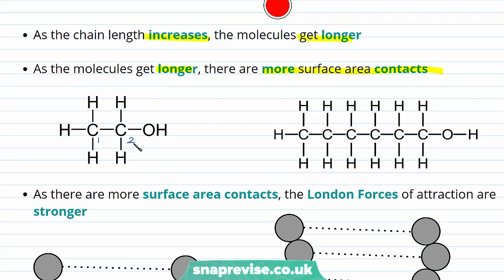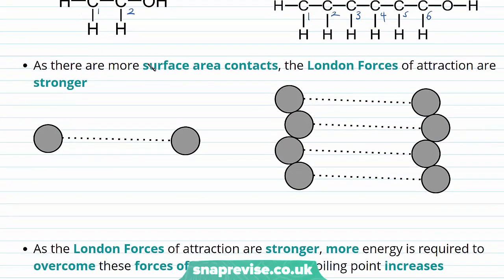...hexanol has one, two, three, four, five, six carbon atoms. Hexanol is comparatively much longer — it has a longer carbon chain. In our longer molecule hexanol, there are more surface area contacts, so the London forces of attraction are stronger. With a shorter chain alcohol there'll be weaker London forces of attraction, but between the molecules of our longer chain alcohols there'll be stronger London forces of attraction, which require more energy to overcome, and therefore the boiling point increases.